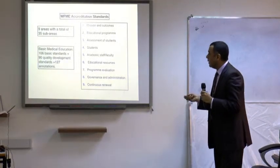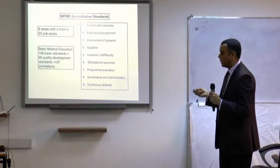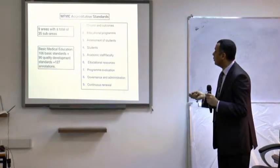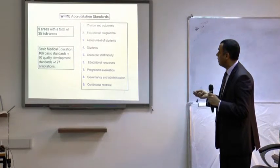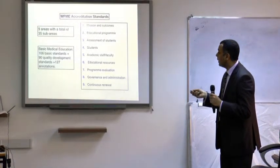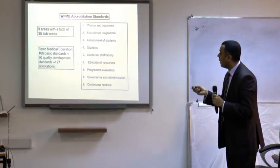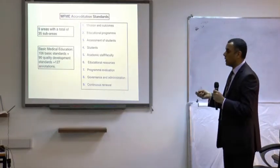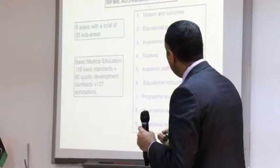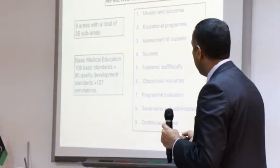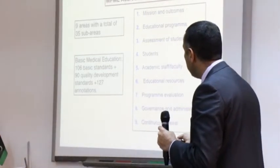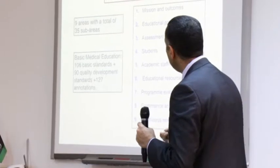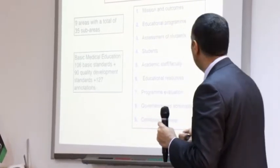The WFME requires nine areas of accreditation and a total of 35 sub-areas. They divide requirements into two things: basic medical education standards and quality development standards. There are 106 basic standards in total, 90 quality improvement standards, and 127 explanations or annotations — to help clarify and make things very clear in the document.